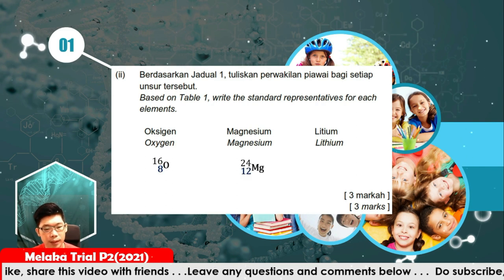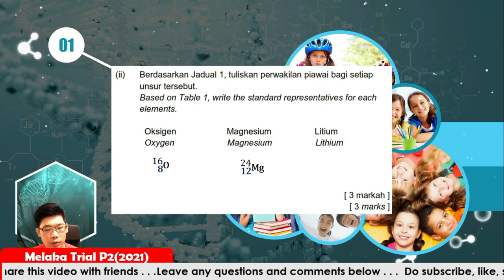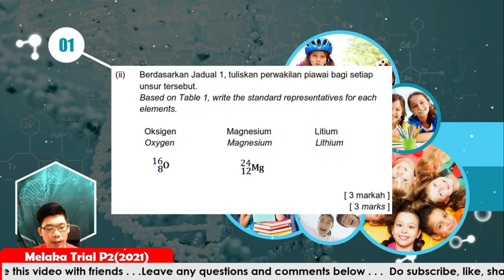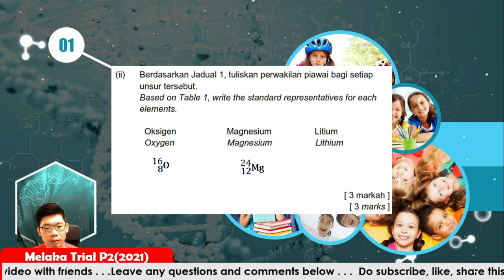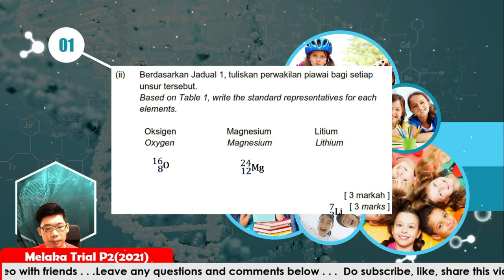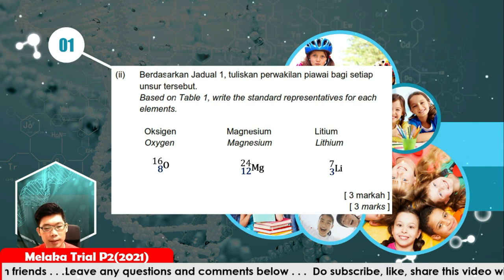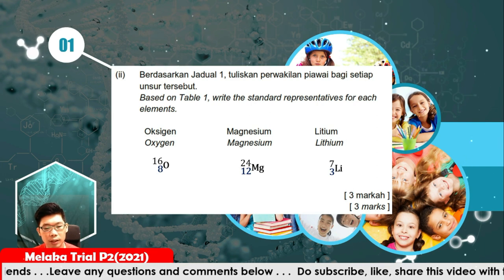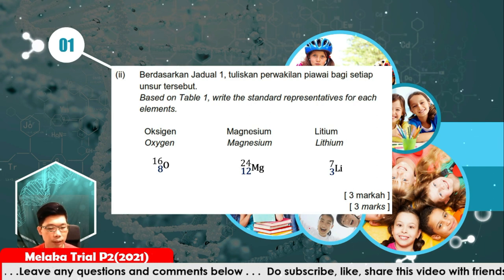For magnesium, the nucleon number is 24 and the proton number is 12. For lithium, the symbol is Li, 7 is the nucleon number, and 3 is the proton number.